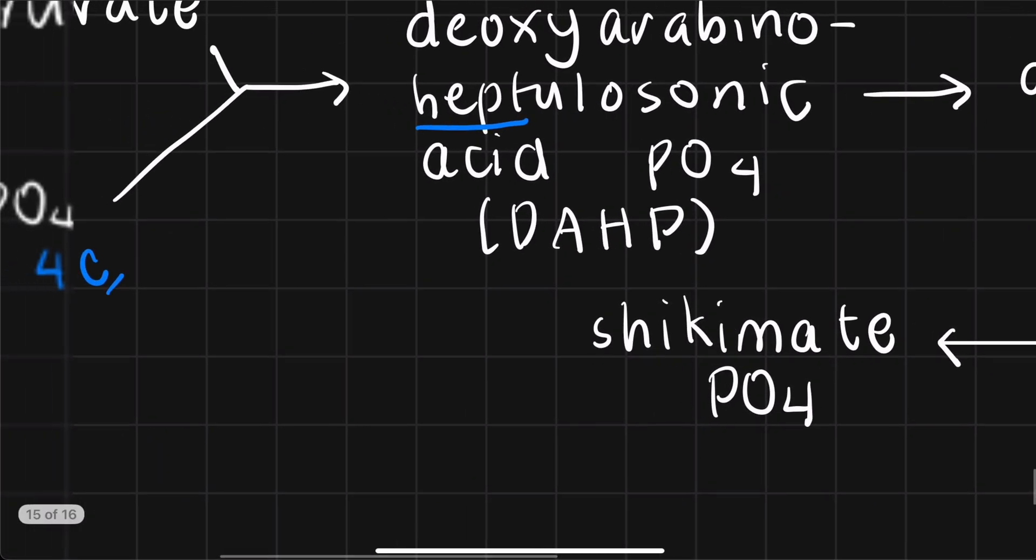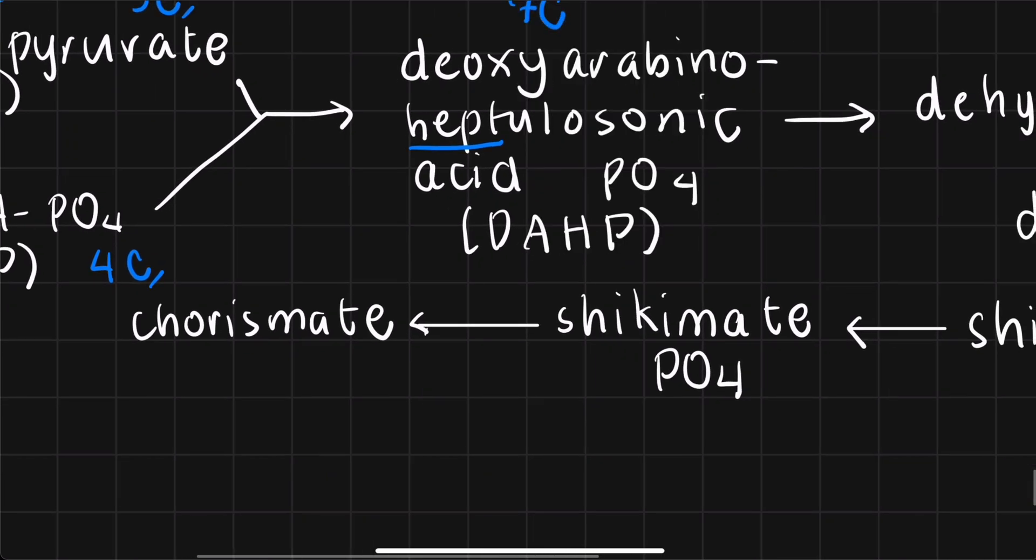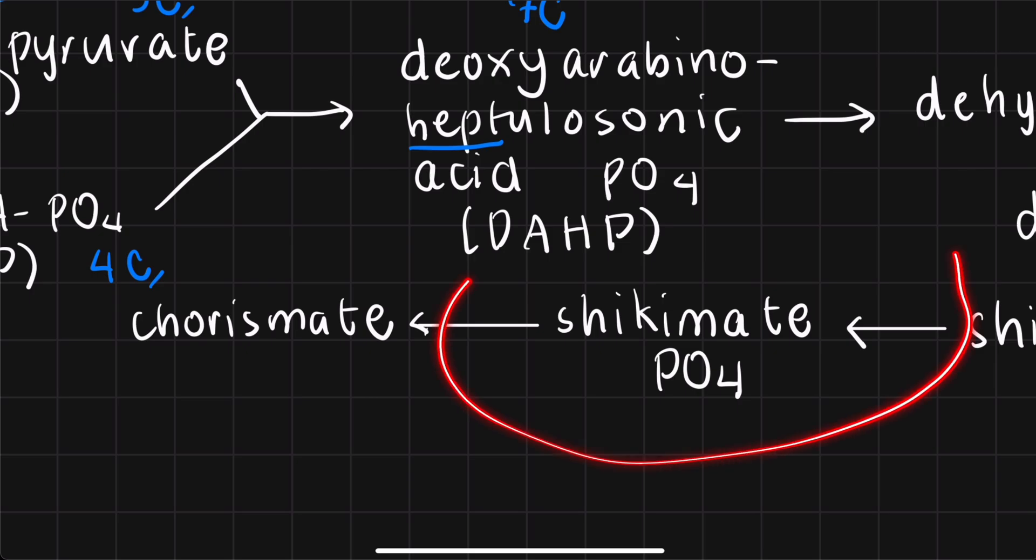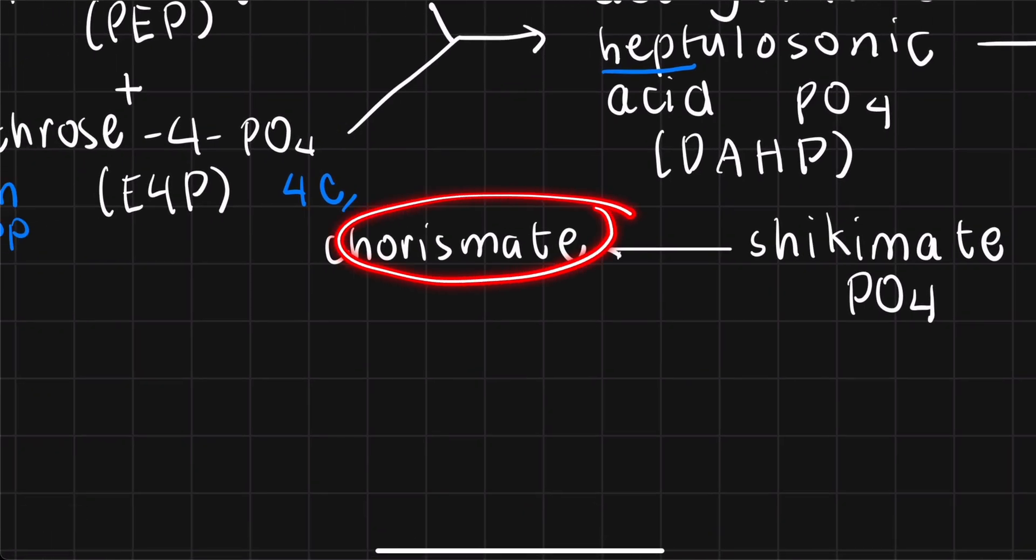And then, going forward, shikimate phosphate is converted into the acid chorismate or chorismate acid. Actually, in other more complete or complex references, there are some steps in between that I skipped. But in standard textbooks, I think this format would be enough. So as I go to chorismate, we have to recognize that this is a branching point for the shikimic acid pathway because you can go to two fates or two routes.